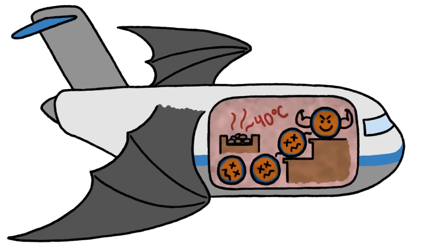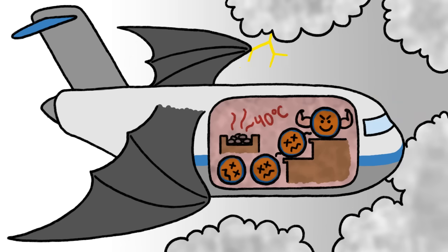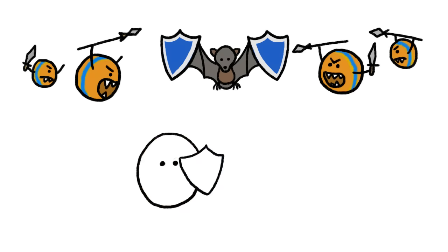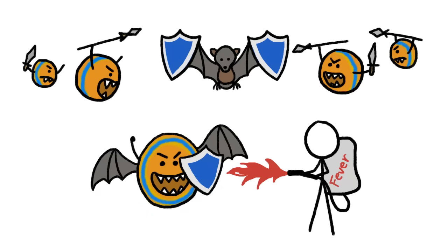But a few hardy viruses have evolved to tolerate the heat. Which, incidentally, means they can definitely weather a meager human fever. Essentially, flight may have helped bats gain virtual immunity to viruses and train viruses to be virtually immune to us.